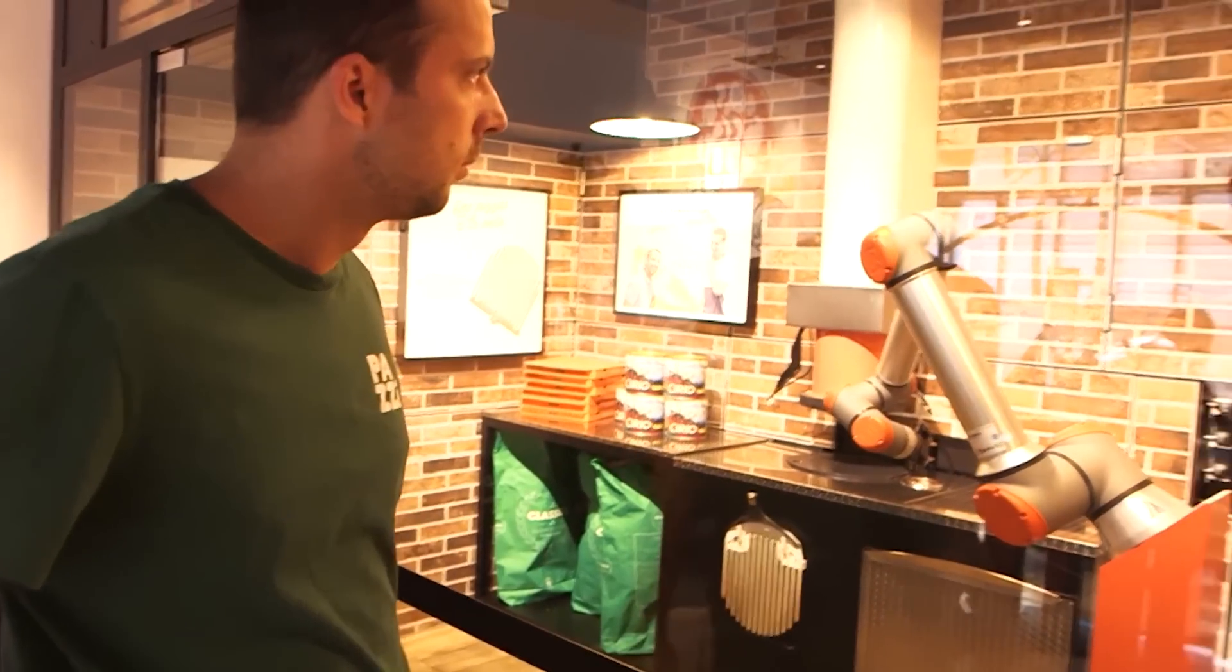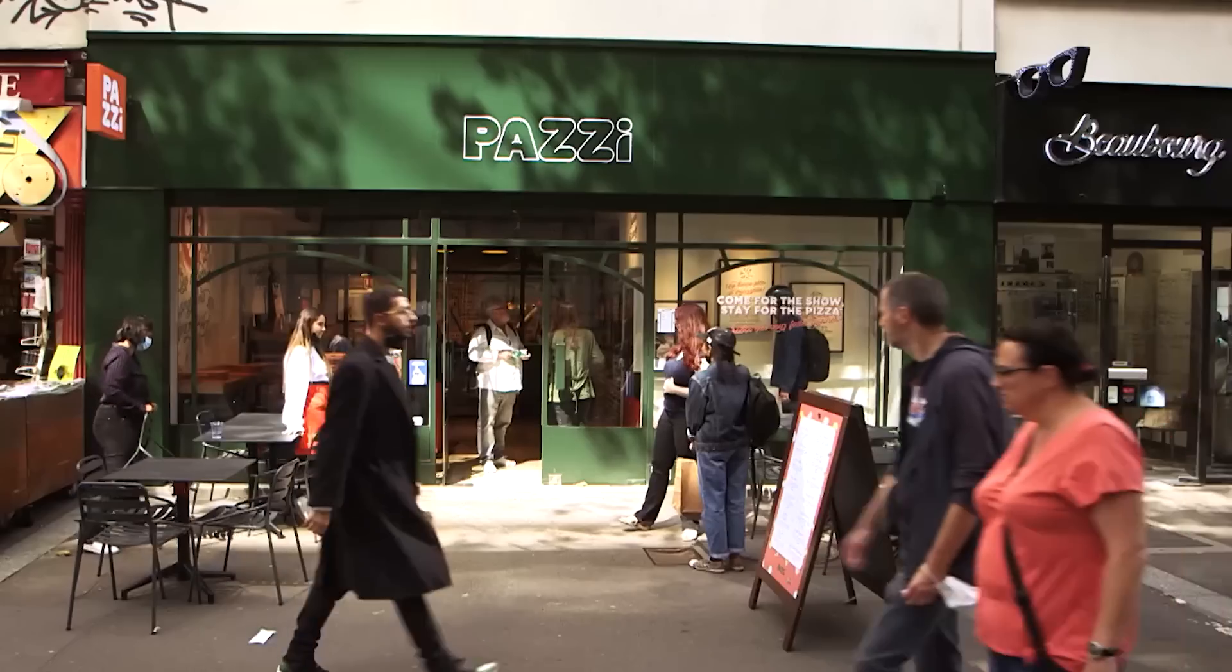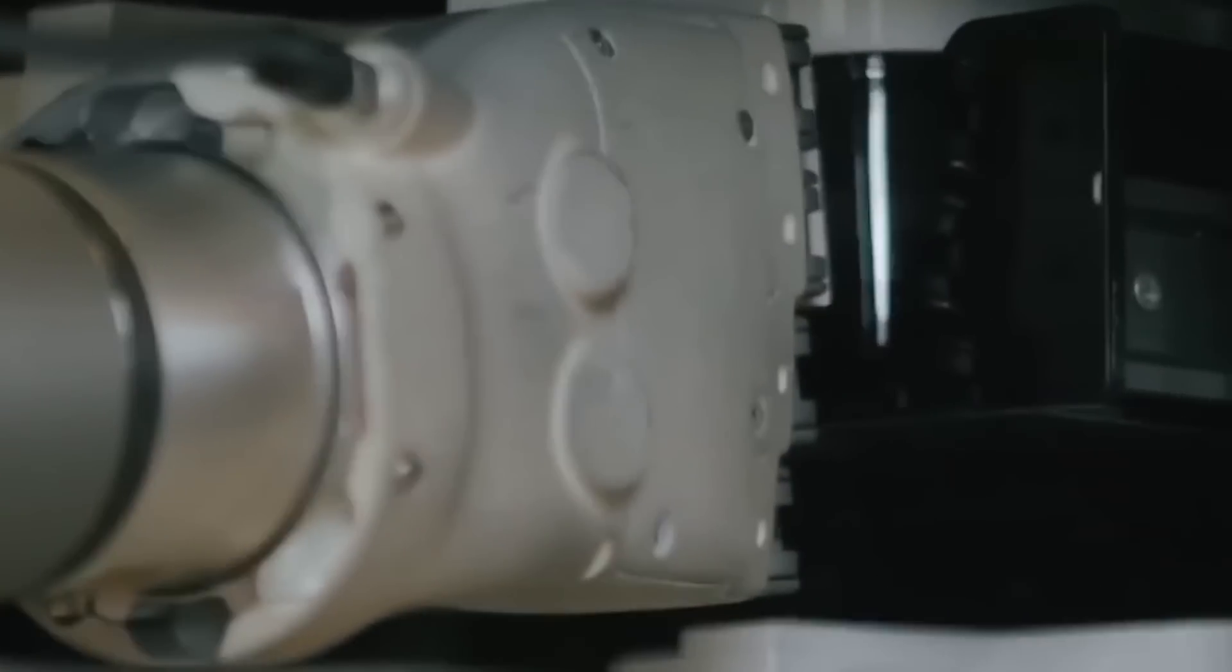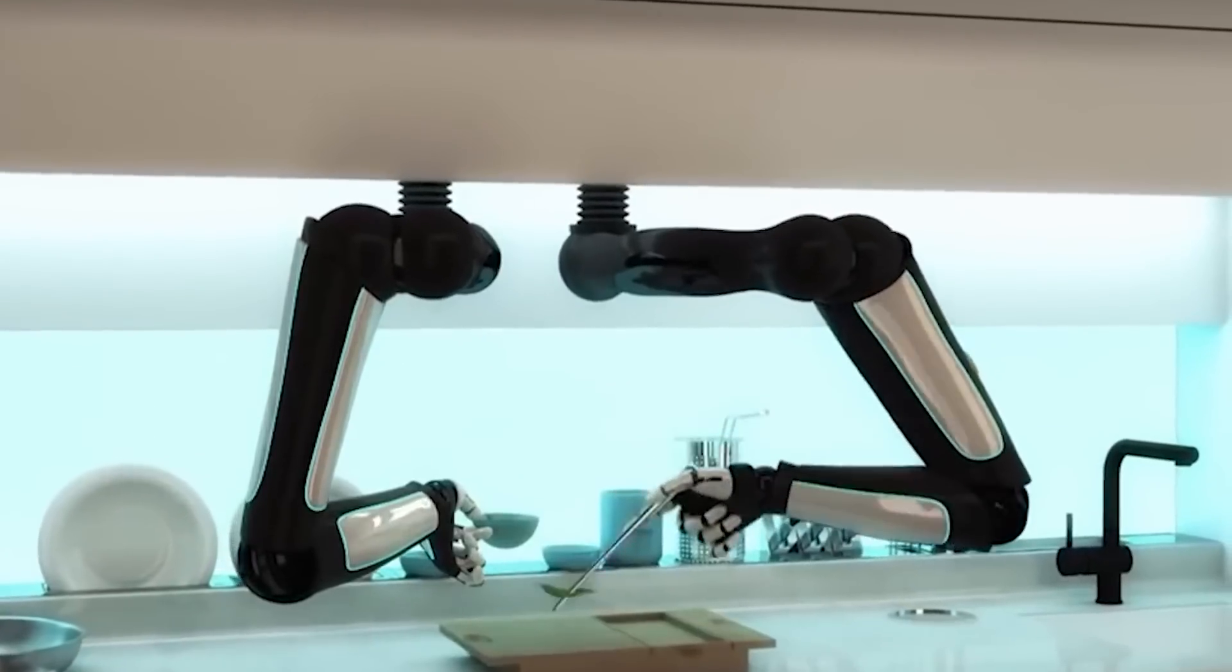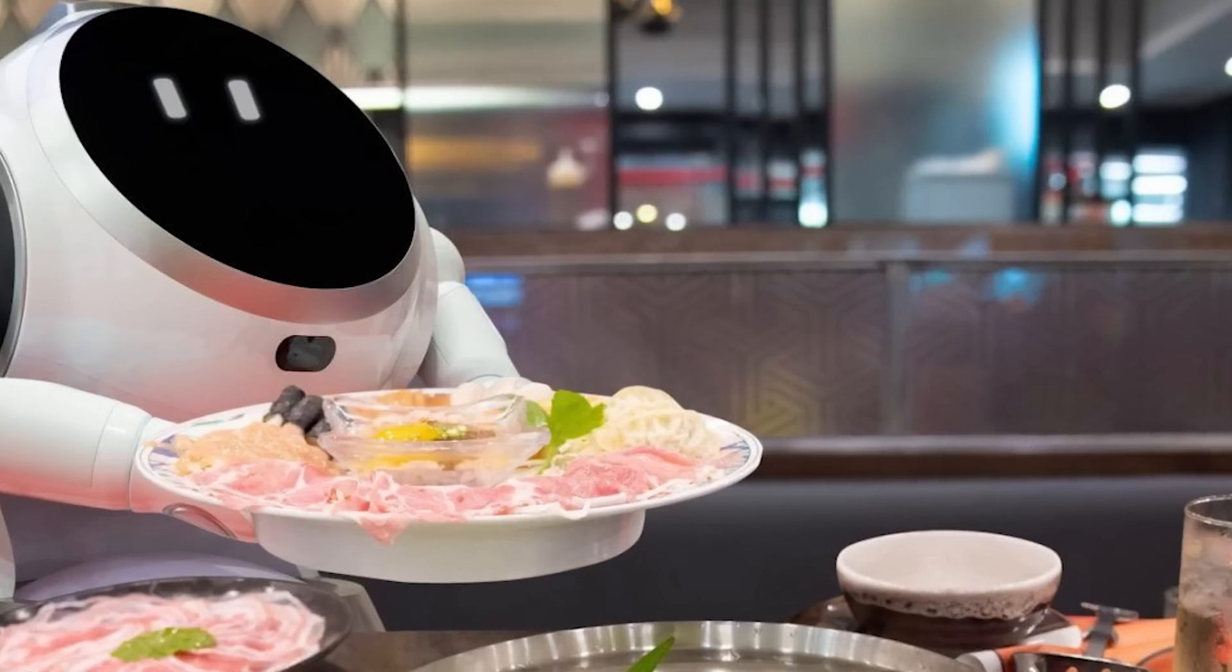Furthermore, automation is transforming food preparation in the fast food industry. Kitchen automation systems and robotic technologies are being utilized to handle repetitive tasks such as burger flipping, food assembly, and even cleaning.